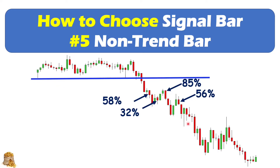Then the next bear bar here — the body is 46% of the whole candlestick, and the tail at the bottom is big. So combining with the next bar, which is a hammer, together these two bars can be a good signal bar. You can enter the market by putting your order at the bottom of this hammer.